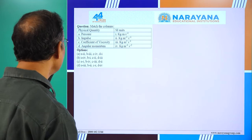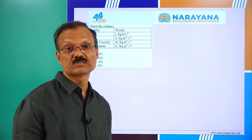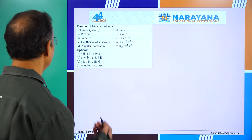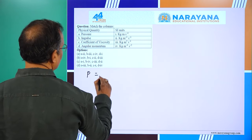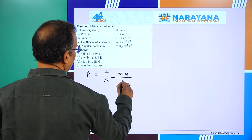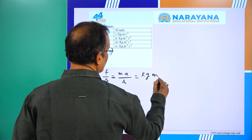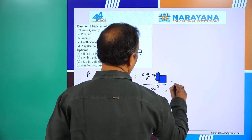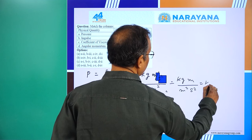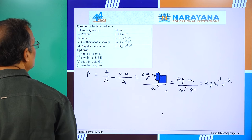Next question asks to match the following physical quantities with their units: pressure, impulse, coefficient of viscosity, and angular momentum. To write units and dimensions, it is essential to know the definition or formula. For pressure: P = force / area = (mass × acceleration) / area = kg·m/s² / m² = kg·m⁻¹·s⁻². This matches option 4.